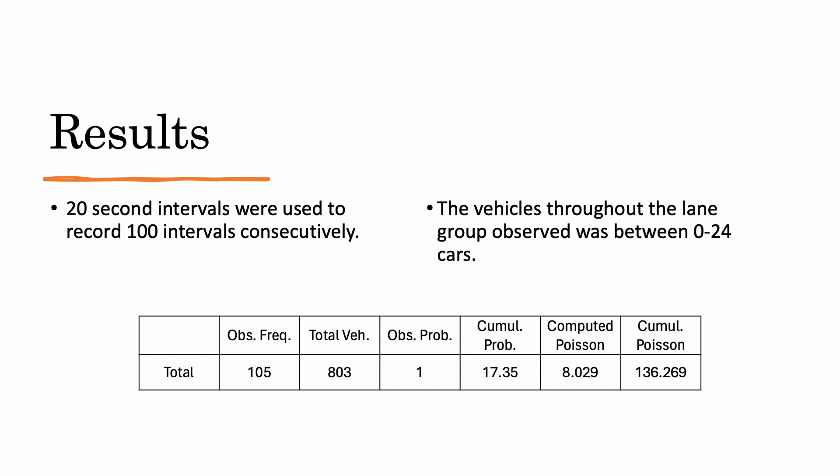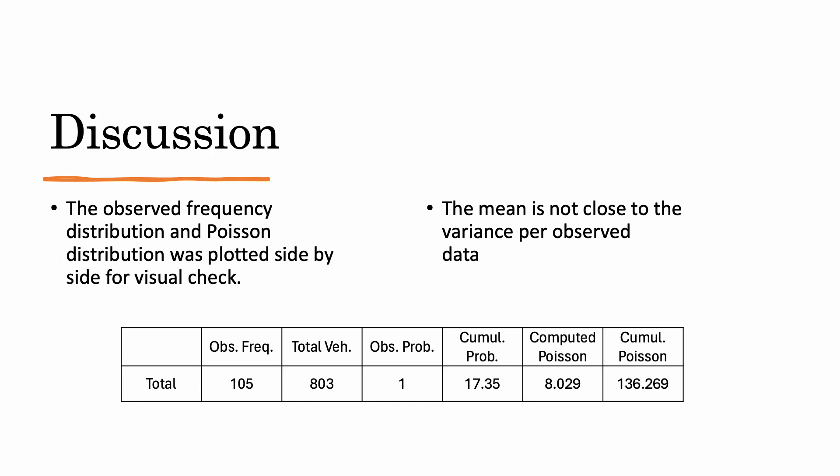The following table shows some of the cumulative results from the data. The cumulative probability is 17%, which shows a low likelihood that the results can be replicated. For the discussion, the observed frequency distribution and Poisson distribution were plotted side by side for a visual check. As you can see in the table, the mean is not close to the variance per the observed data.